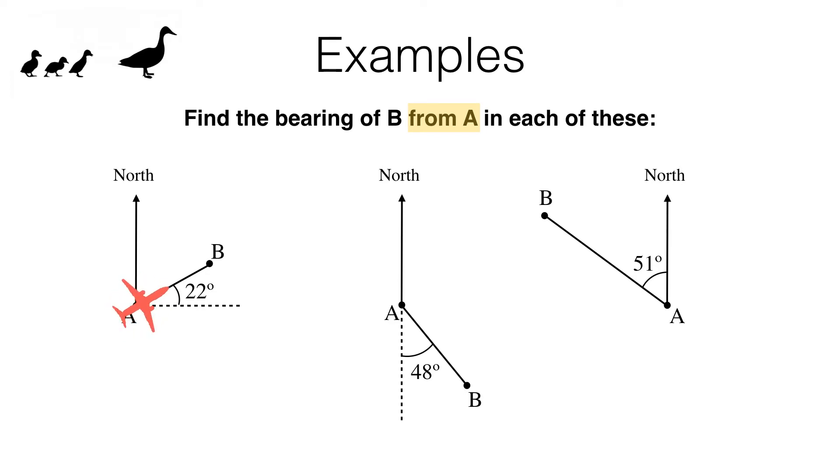So for this first one, this is the clockwise angle we want to turn. Unfortunately the size of this angle is not marked on the diagram, but we know we've got a right angle here and we know that this part is 22 degrees, which means the angle we're looking for is 90 degrees, that's the right angle, minus 22 degrees, which gives us 68 degrees. Now remember we need a three-figure bearing, so we say the bearing of B from A in this case is 068 degrees.